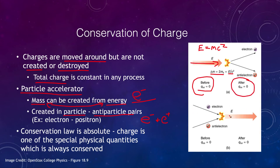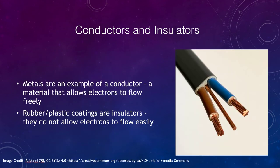That electron and positron will very quickly collide together to produce energy again, so they won't stick around very long because there are so many electrons around. Charge is an absolute conservation law — one of those physical quantities that is always conserved, just like mass and energy.